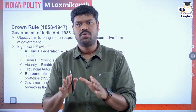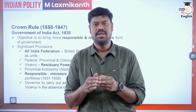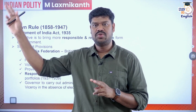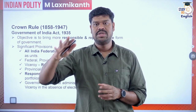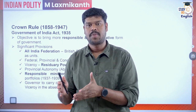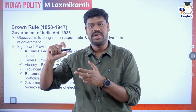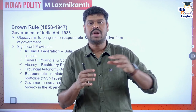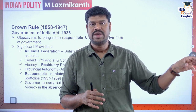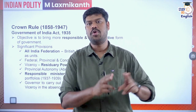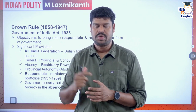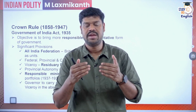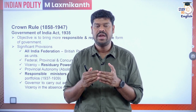After the Sepoy Mutiny of 1857 — also called the first war of Indian independence — the British realized the company's administration was not efficient. Administration was transferred to the British Crown, and a new office was created: the Secretary of State, a member of the British cabinet responsible for Indian administration. The Secretary of State's representative in India was the Viceroy, who reported to the Secretary of State, who was accountable to the British Parliament. This was the scheme brought in by the Government of India Act 1858.